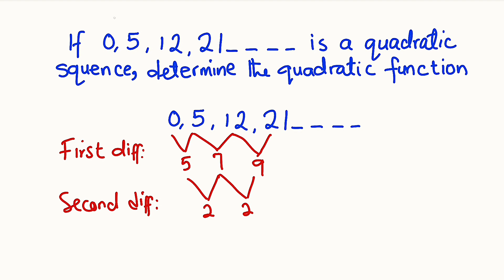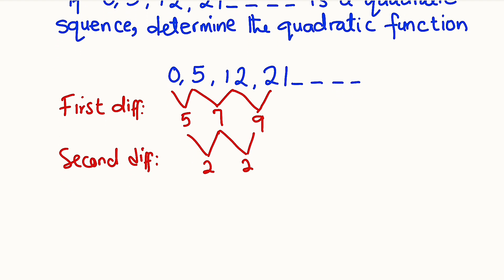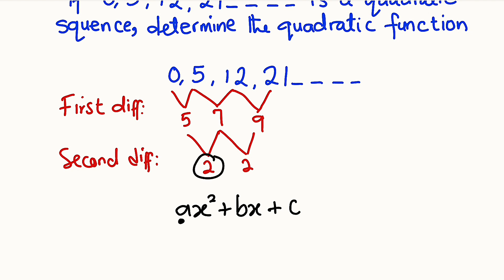Since it is quadratic, let us begin with the solution. Generally, the quadratic polynomial is given as ax² + bx + c. First, let us determine the value of a. The value of a is the second difference divided by 2. The second difference is 2, so 2 divided by 2 is equal to 1. Therefore a is equal to 1.